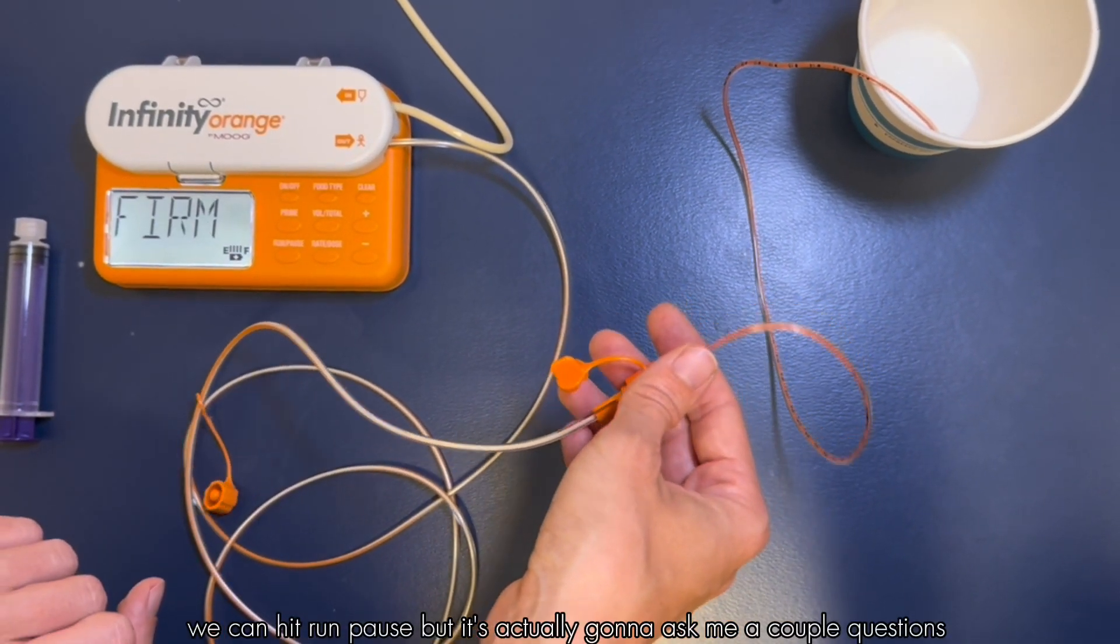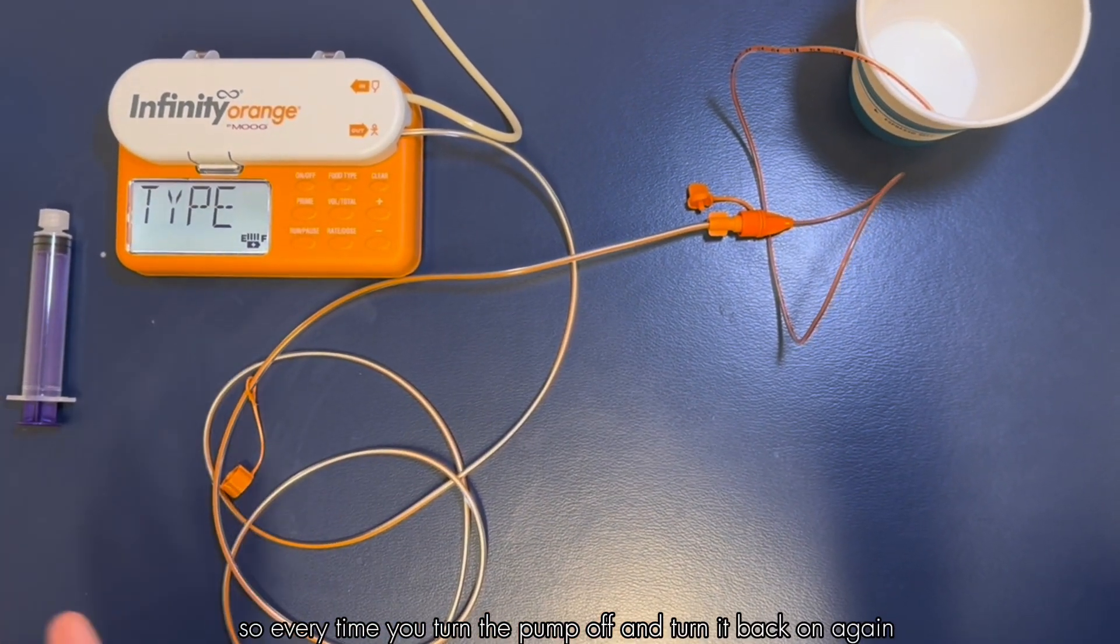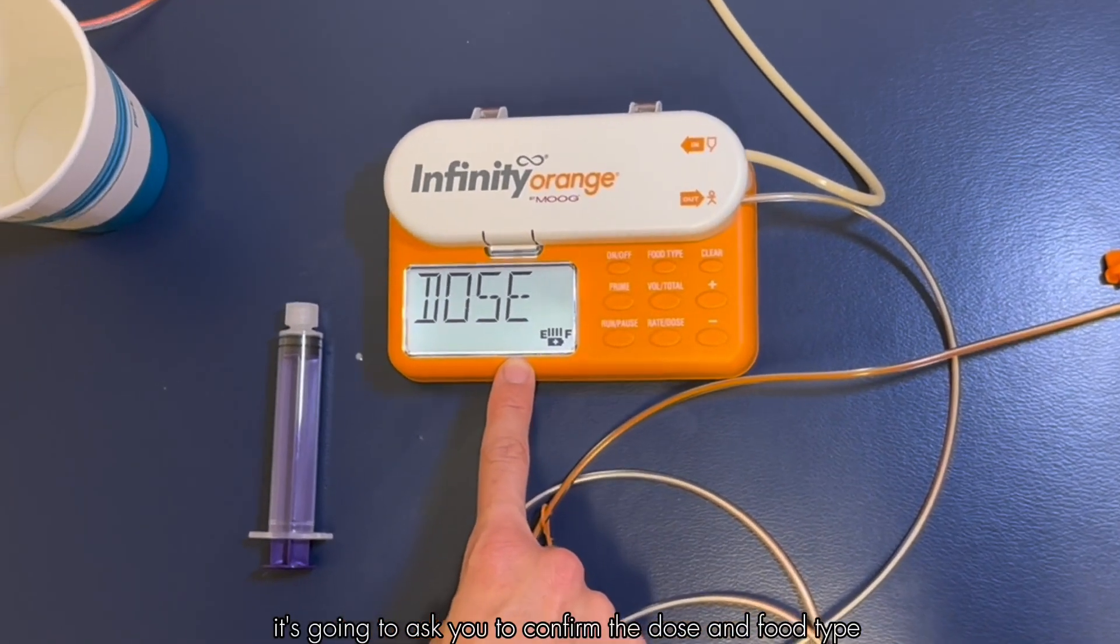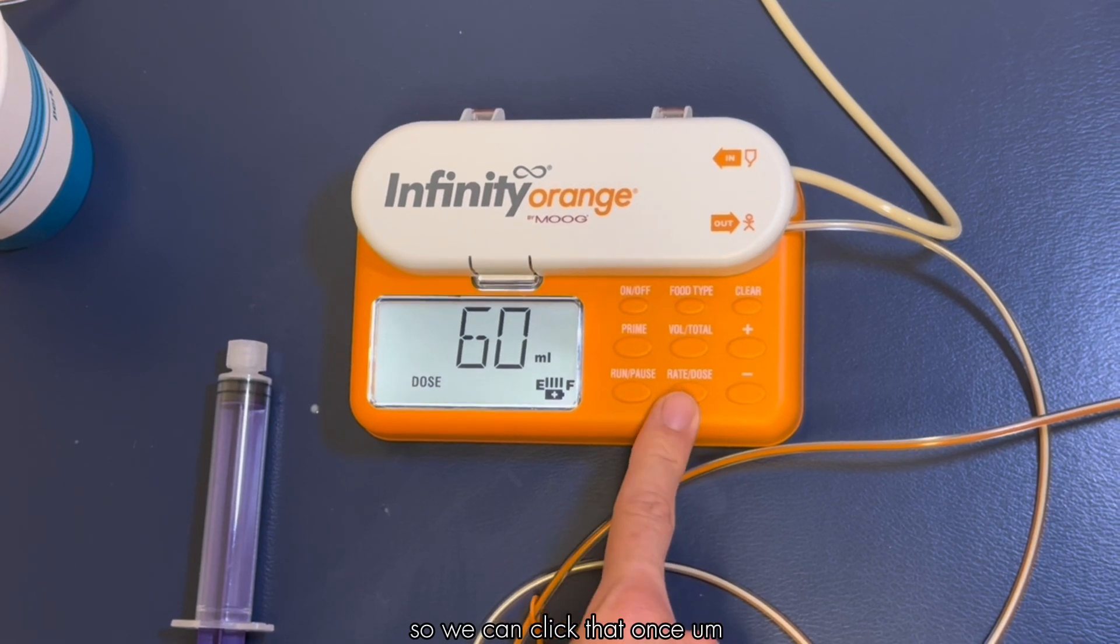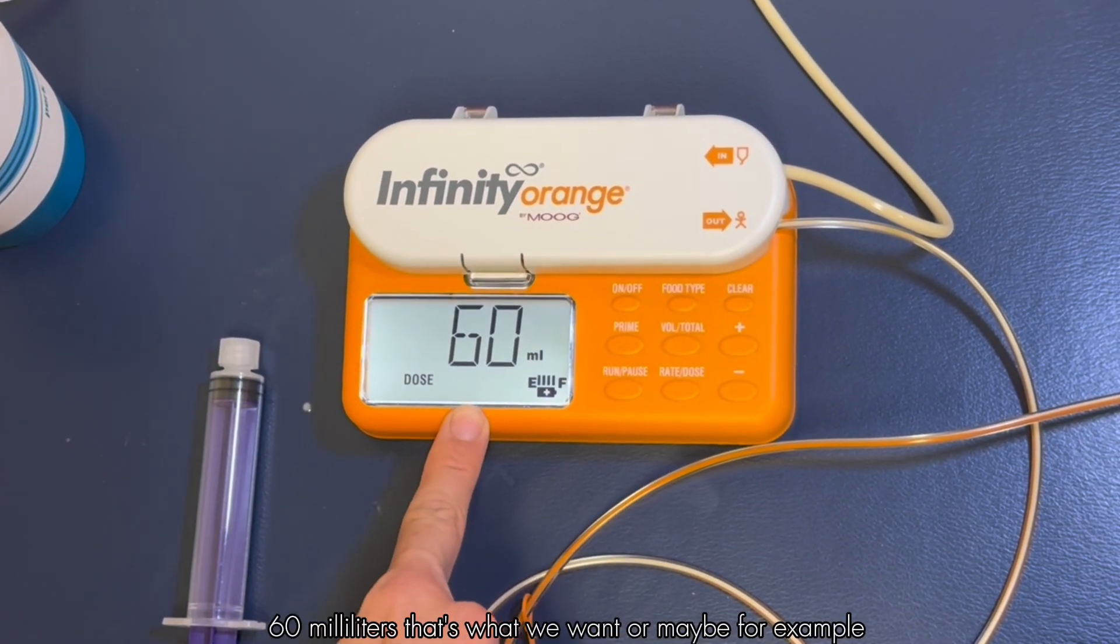But it's actually going to ask me a couple questions. Every time you turn the pump off and turn it back on again and go to start the tube feeding, it's going to ask you to confirm the dose and food type. Our dose button is here with our rate dose. We can click that once and then that'll show us the dose 60 milliliters. That's what we want.